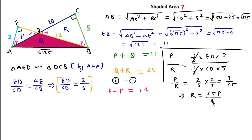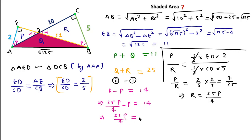Substituting R = 25P/4 into R − P = 14, we get 25P/4 − P = 14, which gives 21P/4 = 14, so P = (14 × 4)/21 = 8/3.